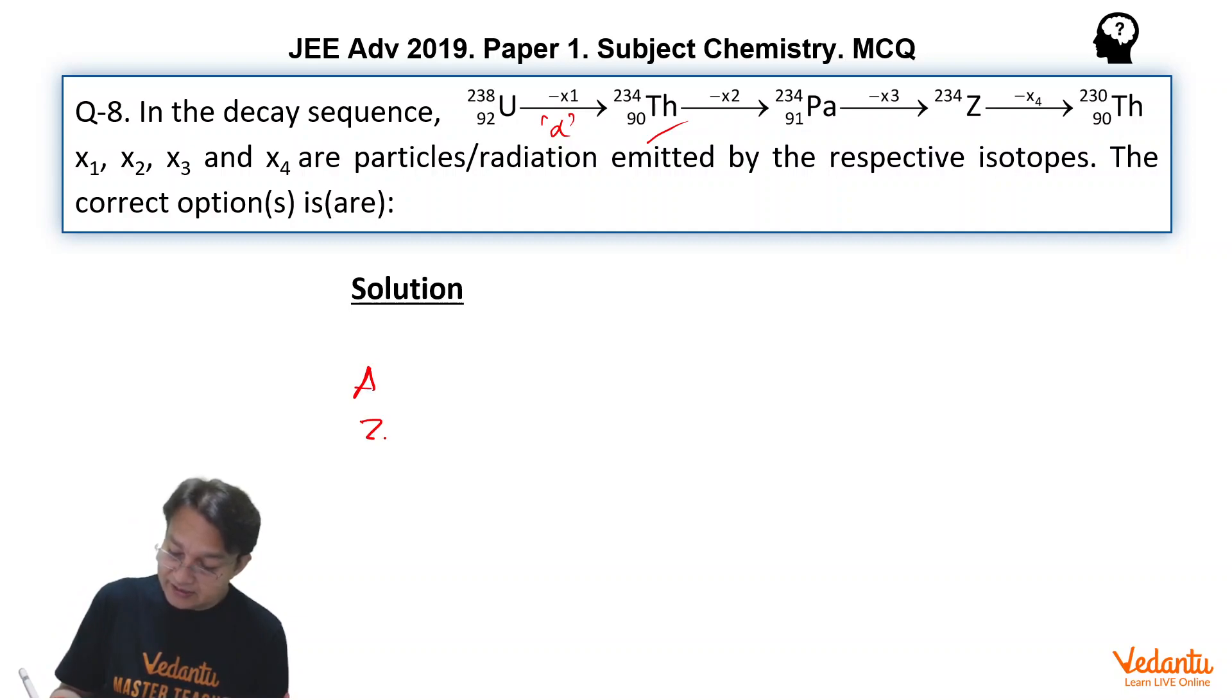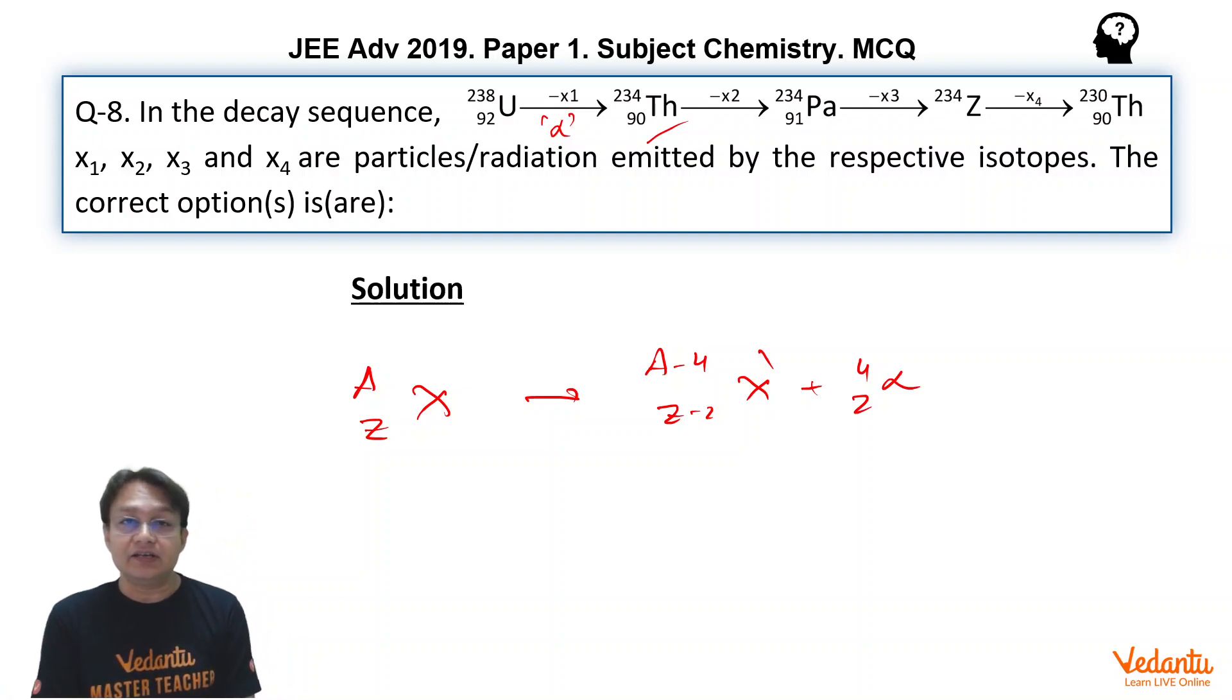Because 238 is changing into 234, and we know that in alpha decay, if you write it like AZX, so this is going to be A-4 and this is going to be Z-2, X-dash plus 4-2 alpha. So that's alpha decay. Only alpha decay can bring about the change in mass. So it's very clear that X1 is an alpha decay.